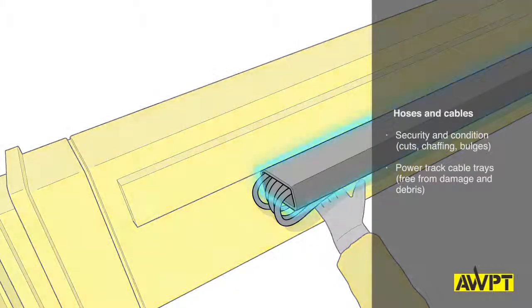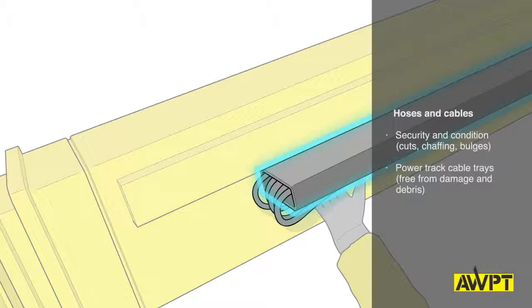Next, check the power track that it's securely attached to the boom and has no damage to the tracking links and hoses and is free of debris.